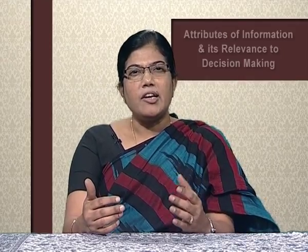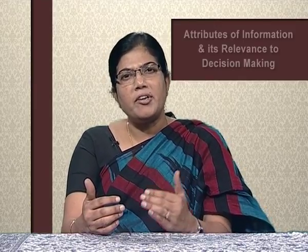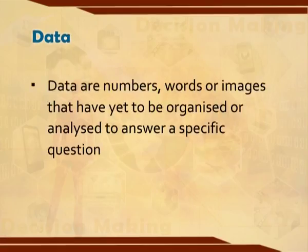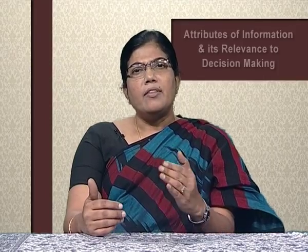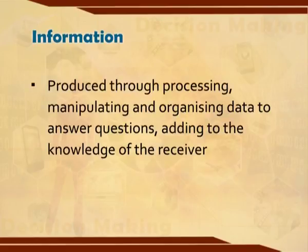Explanation of related words — data, information and knowledge — which are related to management information systems. First, data: data are numbers, words or images that have yet to be organized or analyzed to answer a specific question. For example, the crude oil price is 40 dollars per barrel. Second, information: it is produced through processing, manipulating and organizing data to answer certain questions, adding to the knowledge of the receiver.